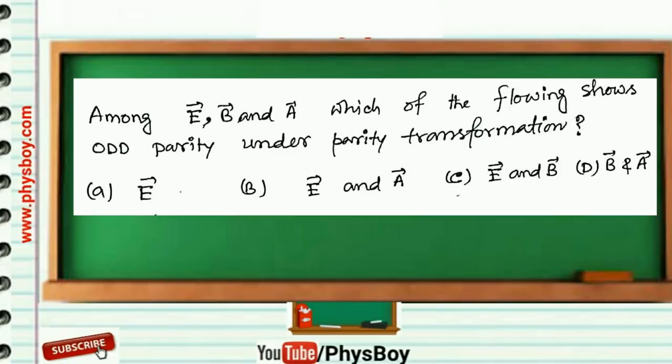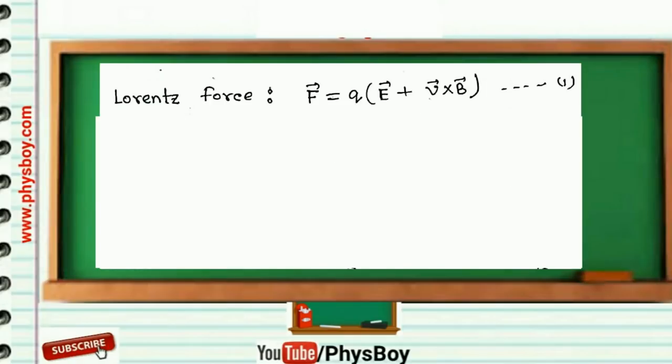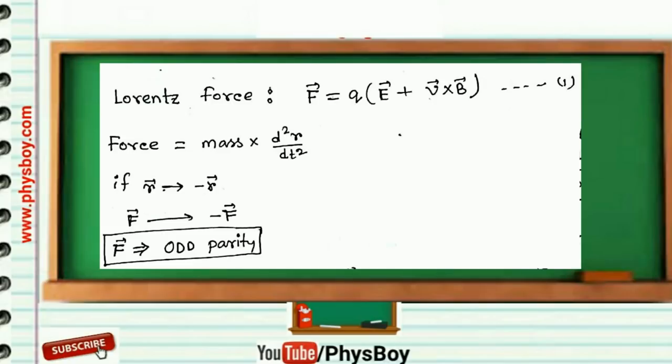(d) B vector and A vector. You know that Lorentz force is written as F⃗ = q(E⃗ + v⃗×B⃗), which can be written as mass times d²r/dt². If r⃗ changes to -r⃗, then force will also change F⃗ to -F⃗.